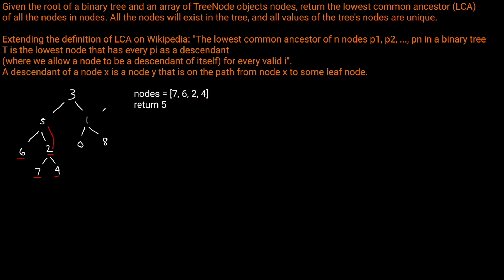We're still going to do DFS in the same way. We start at the root and check: is this node in nodes? No, it's not — so we need to go into its left subtree. We get to 5. Is 5 in nodes? No, it's not — so we go into its left and right subtrees. Going left, we're at 6. Is 6 in nodes? Yes — so we return 6 up to the 5.